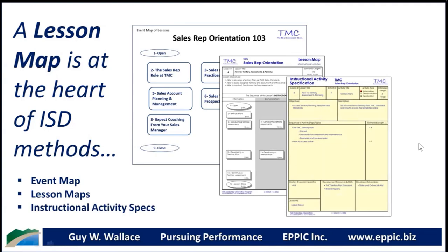For every one of those little rectangular boxes, clients would get an instructional activity specification. So there are three levels to my design outputs when I put together a design document. The instructional activity spec is the lowest level of detail — it's where we identify the specifics of the content, how it will be delivered or deployed, what source materials we have, and who the experts are for that particular chunk of the modular design.